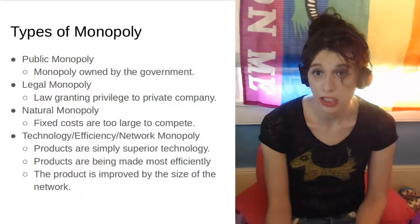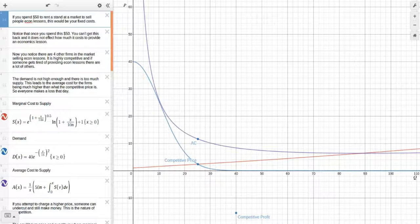But of course, if you want to understand why people are critiquing, let's look at the standard monopoly case. So here's our scenario for a natural monopoly. Let's just say you spend $50 to rent a stand at a market to sell people economics lessons. This would be your fixed cost. Now notice that once you spend this $50 you can't get this back and it does not affect how much it costs to provide an economics lesson. Now you also notice that there are four other firms in the market selling economics lessons. It is highly competitive and if someone gets tired of providing economics lessons, there are a lot of others. The demand is not high enough and there's too much supply. This leads to the average cost for firms being much higher than what the competitive price is. So everyone makes a loss that day.